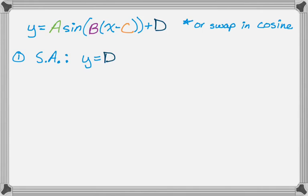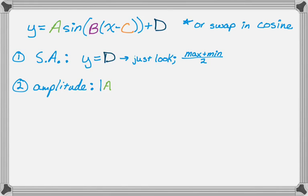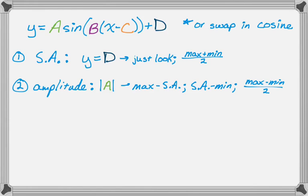The first thing is the sinusoidal axis, and that's just y equals d. You can look at the graph to find that, or you can do the maximum plus the minimum divided by 2 — it's the average of the maximum and minimum, kind of like the middle of the graph. The next thing is the amplitude, which is the absolute value of a. You can find it by doing the maximum minus the sinusoidal axis, the sinusoidal axis minus the minimum, or half the distance between the maximum and minimum — that's really what amplitude is, how far you can get from the sinusoidal axis.